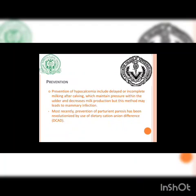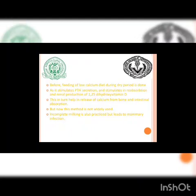Prevention: prevention of hypocalcemia includes delayed or incomplete milking after calving, which maintains pressure within the udder and decreases milk production — though this method may lead to various mammary infections. More recently, prevention of parturient paresis has been revolutionized by use of dietary cation-anion difference. Previously, feeding a low-calcium diet during the dry period was done, as it stimulates PTH secretion and stimulation.